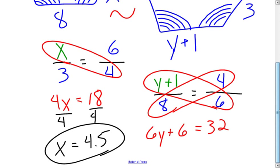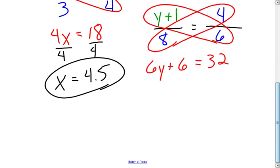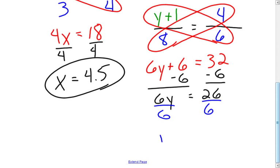Continue to solve my equation. Get rid of that 6. Now I have 6y equal to 26. Divide both sides by 6. And I find out that y is equal to 13 thirds. Or if you wanted to convert that into a decimal format, that would be approximately 4.33.